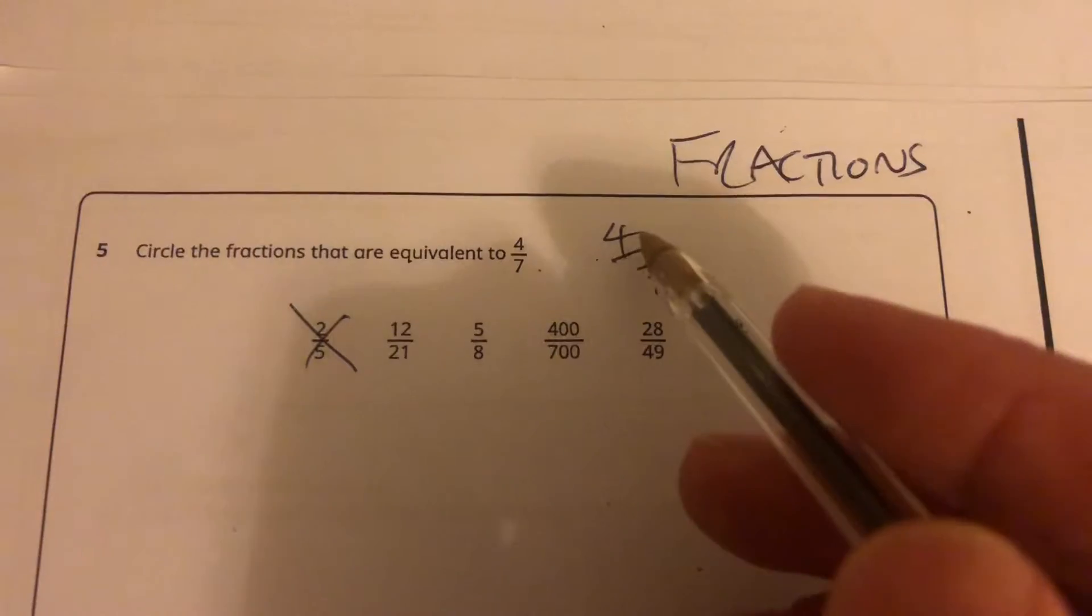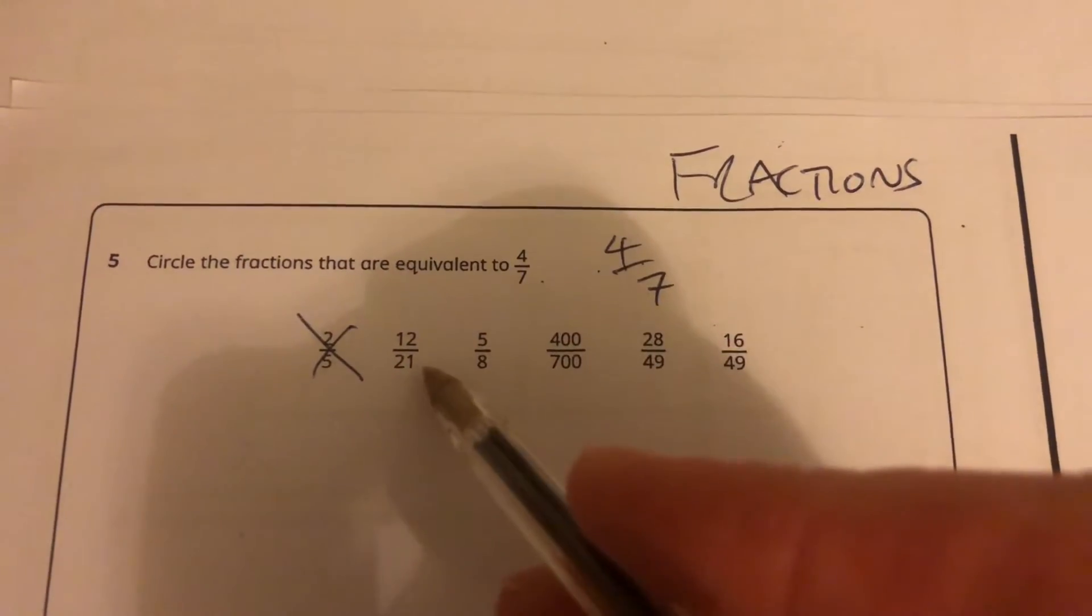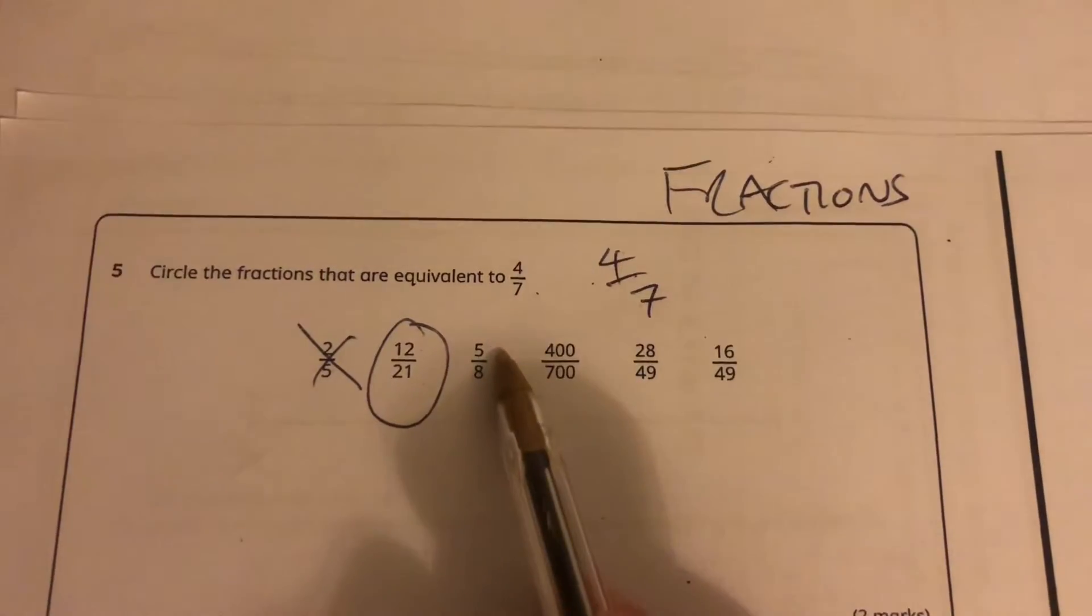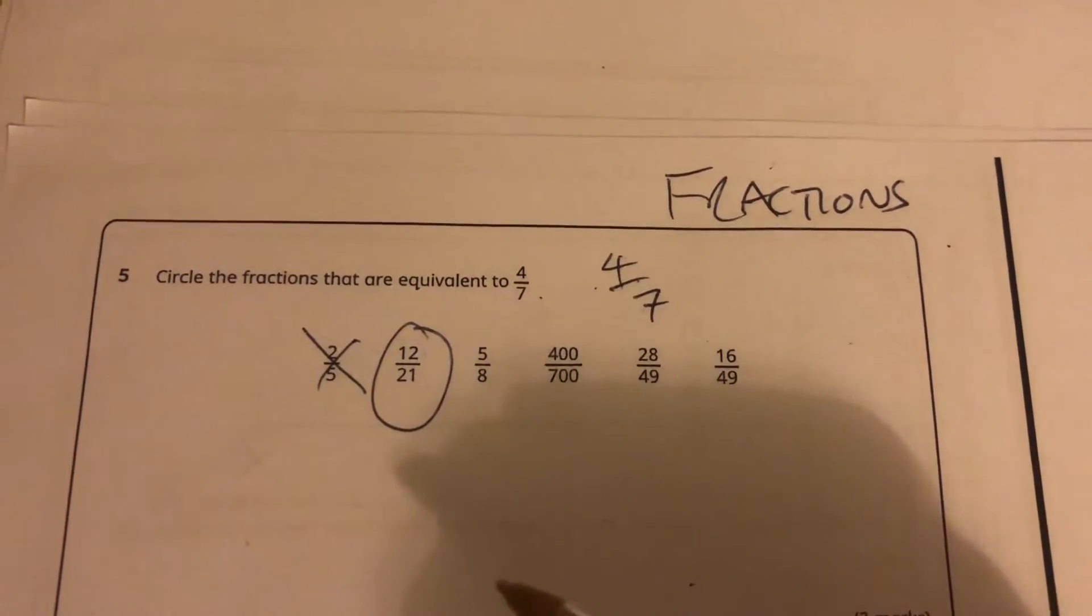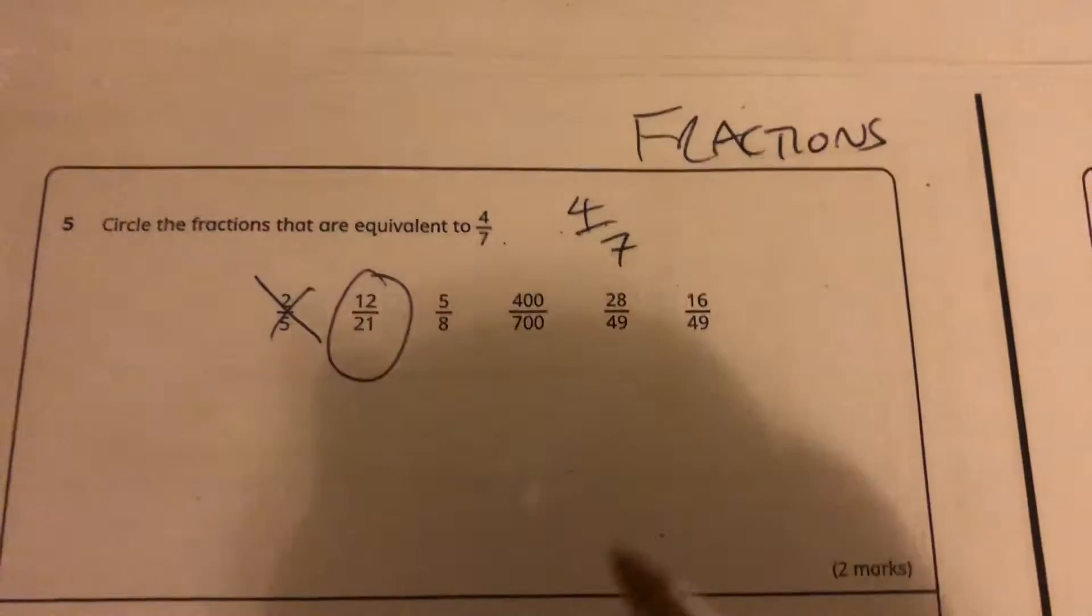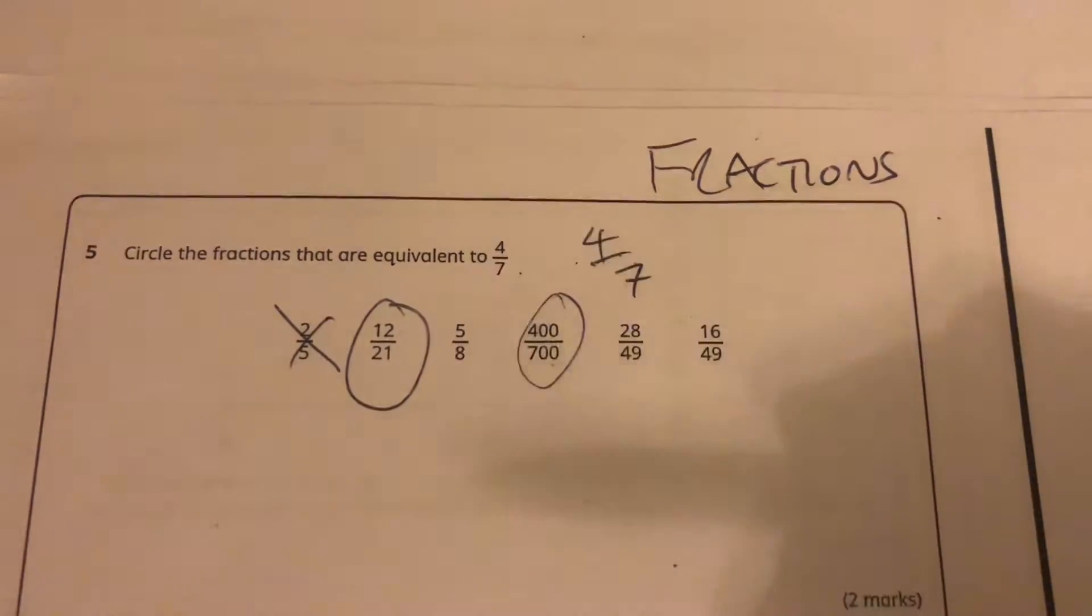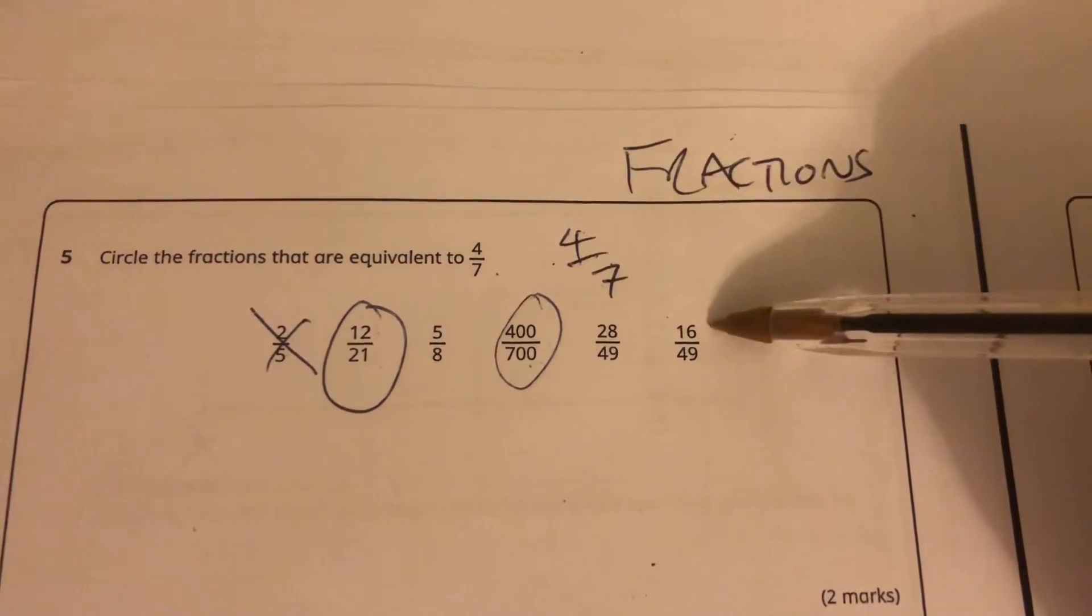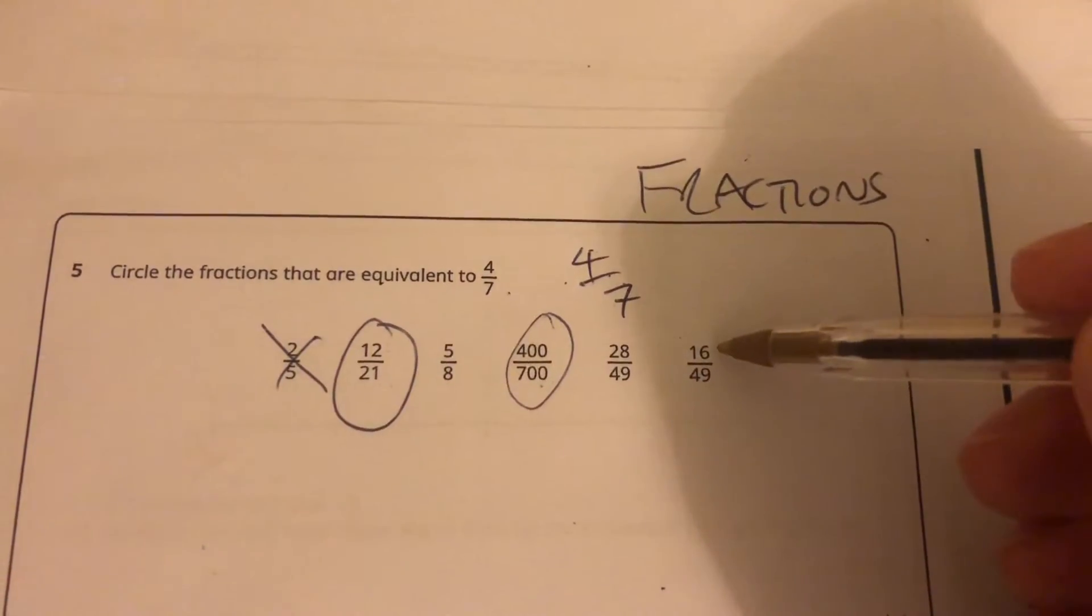12 is in the 4 times table. 4 times 3 is 12, and 7 times 3 is 21, so that's right. 4 to 5 isn't going to be the same as 7 to 8. I'm going to have to compare those fractions. I'll come back to that one in a second. 400 over 700, multiply them both by 100, yeah that's correct. This last one, 4 times 4 is 16, but 4 times 7 is actually 28, so it can't be that one.